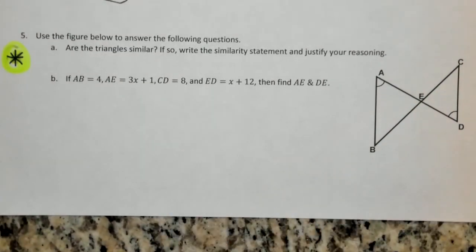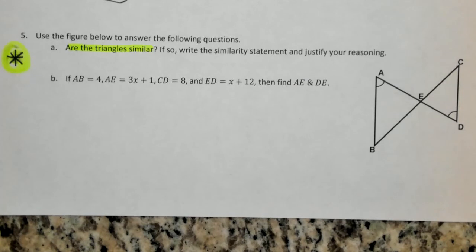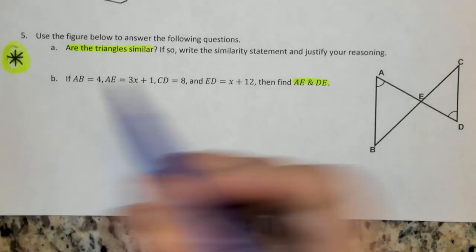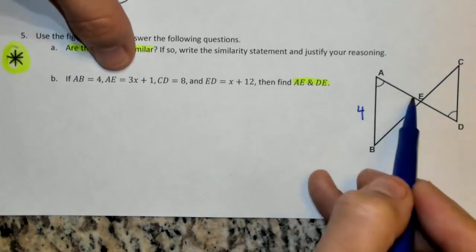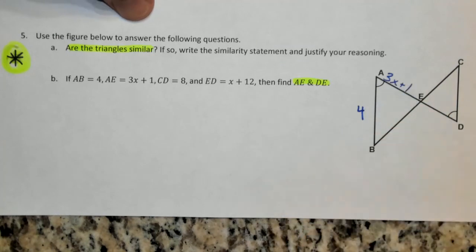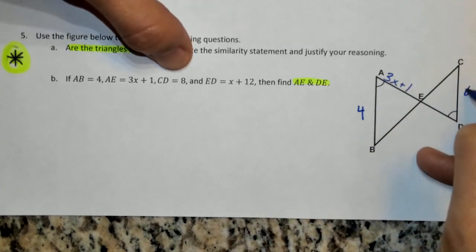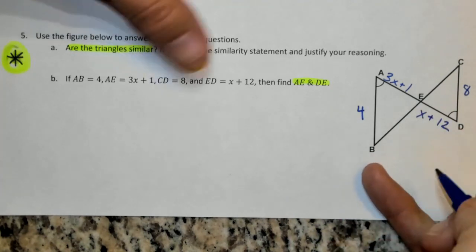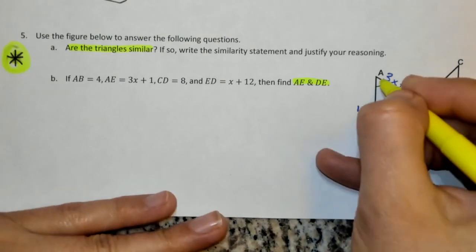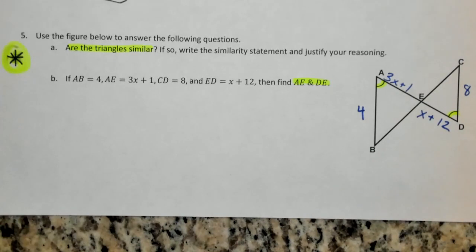Number 5: we need to write the similarity statement and figure out the lengths of AE and DE. Segment AB is 4, AE is 3X plus 1, CD is 8, and ED is X plus 12. We already have two congruent angles marked, so we need to find out if the sides are proportional. Set up your ratios using the knowledge from previous problems, try this one on your own, and we'll go over it in class.